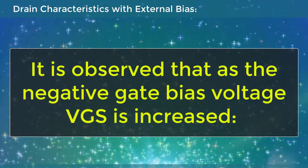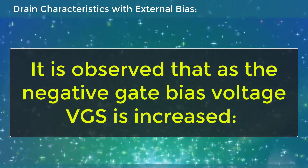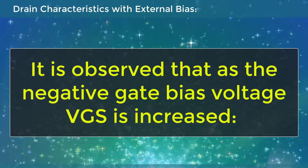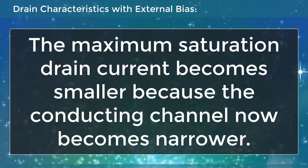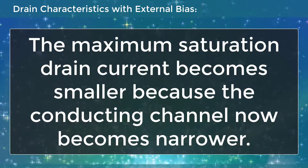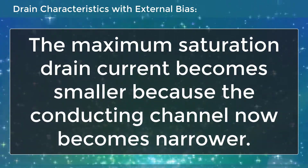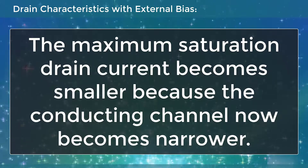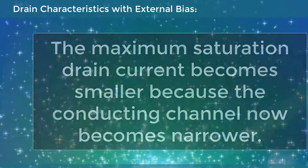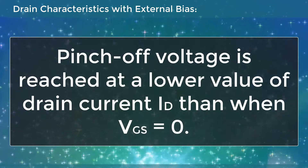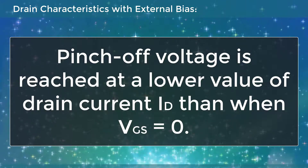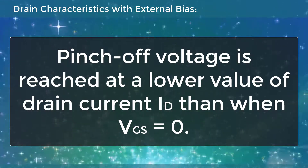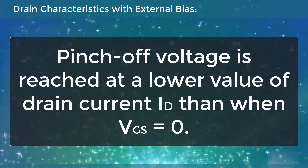It is observed that as the negative gate bias voltage VGS is increased, the maximum saturation drain current becomes smaller because the conducting channel now becomes narrower. Pinch-off voltage is reached at a lower value of drain current ID than when VGS is equal to 0.